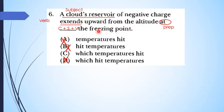At which temperatures heat the freezing point. Jadi di sini: chart extends upward from the altitude at which temperatures heat the freezing point. Sekarang kita ke soal nomor 7.